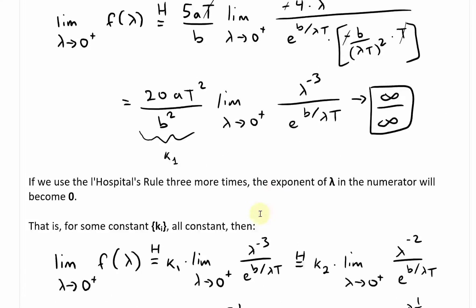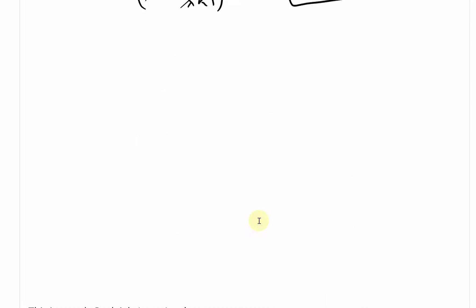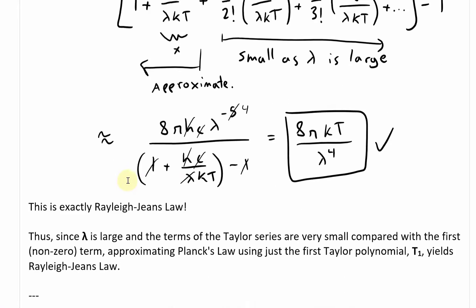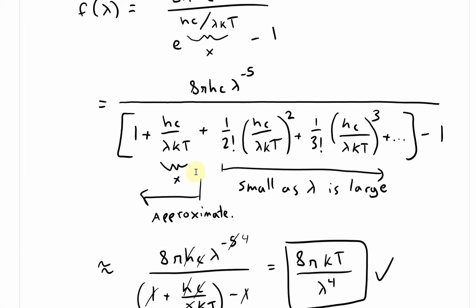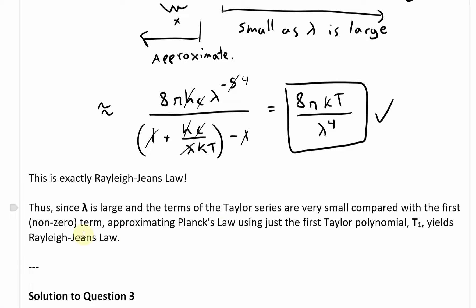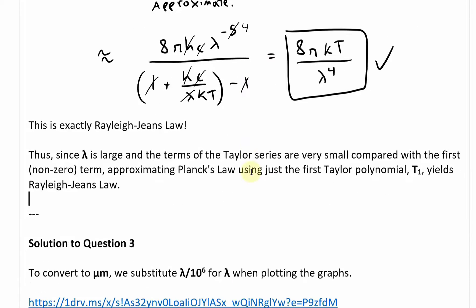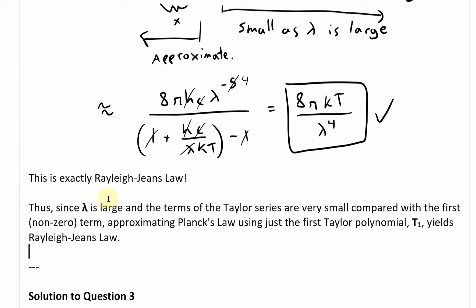So in conclusion: since lambda is large, the terms of the Taylor series are very small compared to the first non-zero term. Approximating Planck's law using just the first Taylor polynomial T1, the first non-trivial term, yields Rayleigh-Jeans law. That is the solution to question 2.